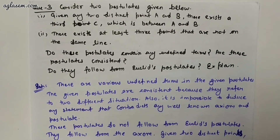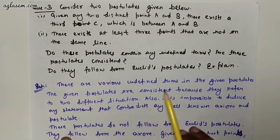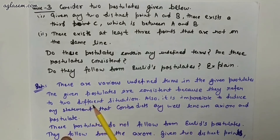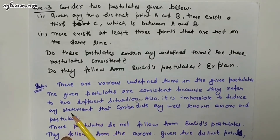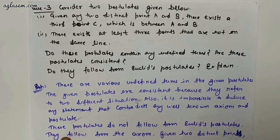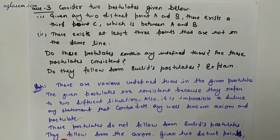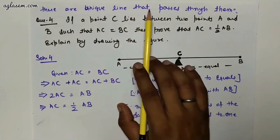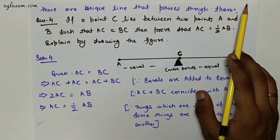There are various undefined terms in the given postulates. The given postulates are consistent because they refer to two different situations. Also, it is impossible to deduce any statement that contradicts any well-known axioms and postulates. These postulates do not follow from Euclid's postulates; they follow from the axiom: given two distinct points, there is a unique line that passes through them.